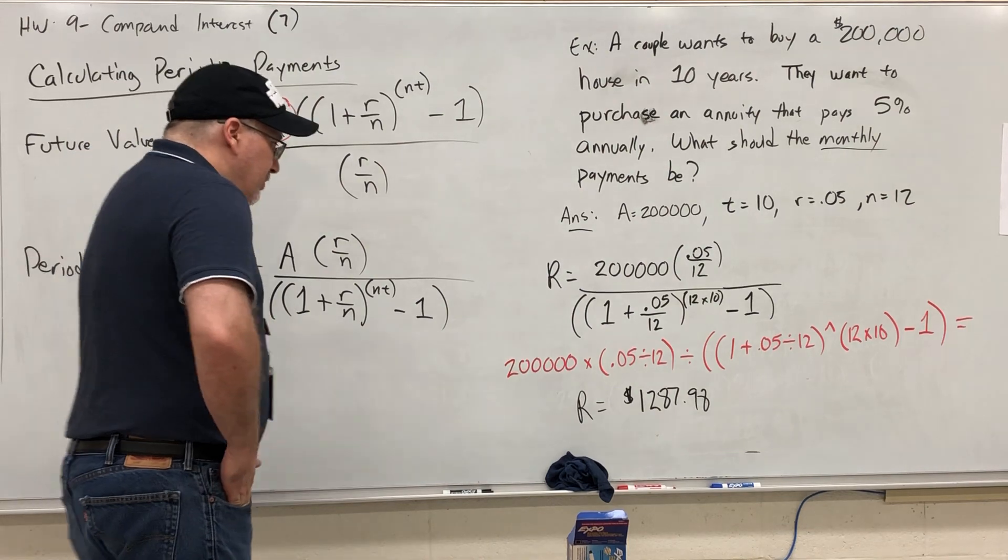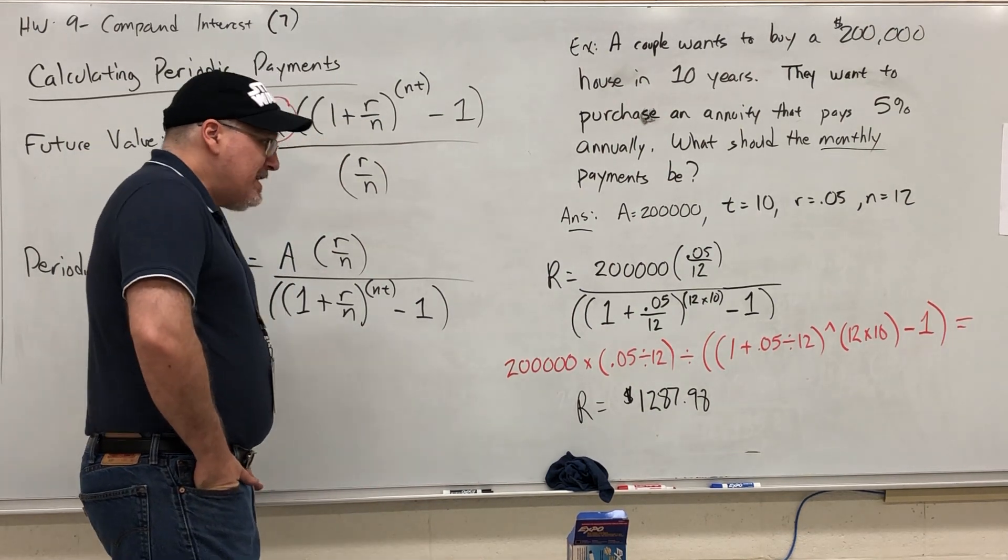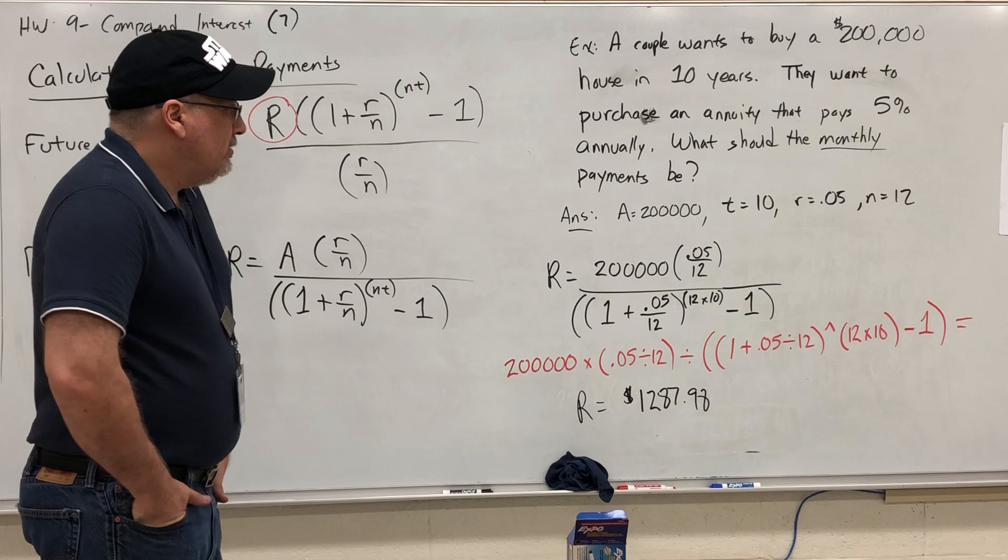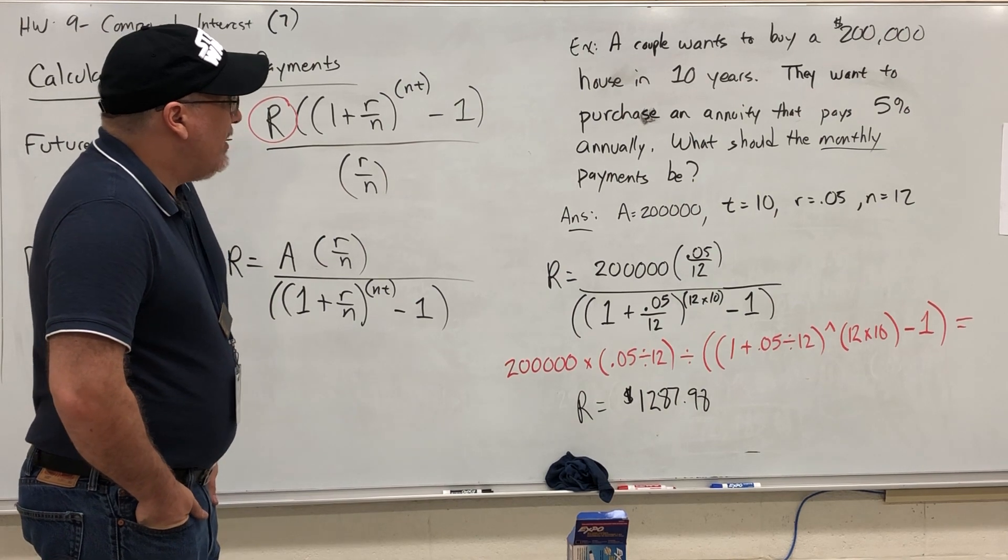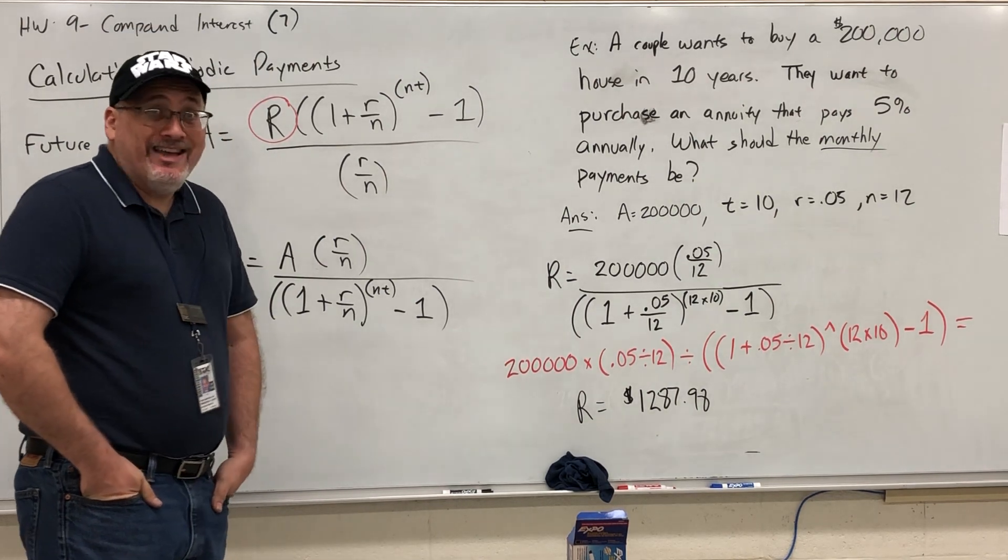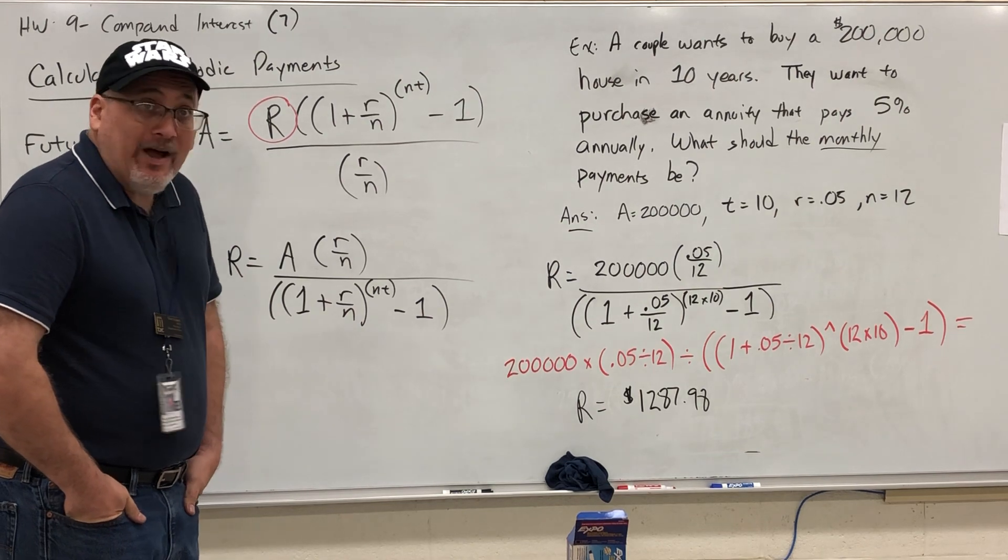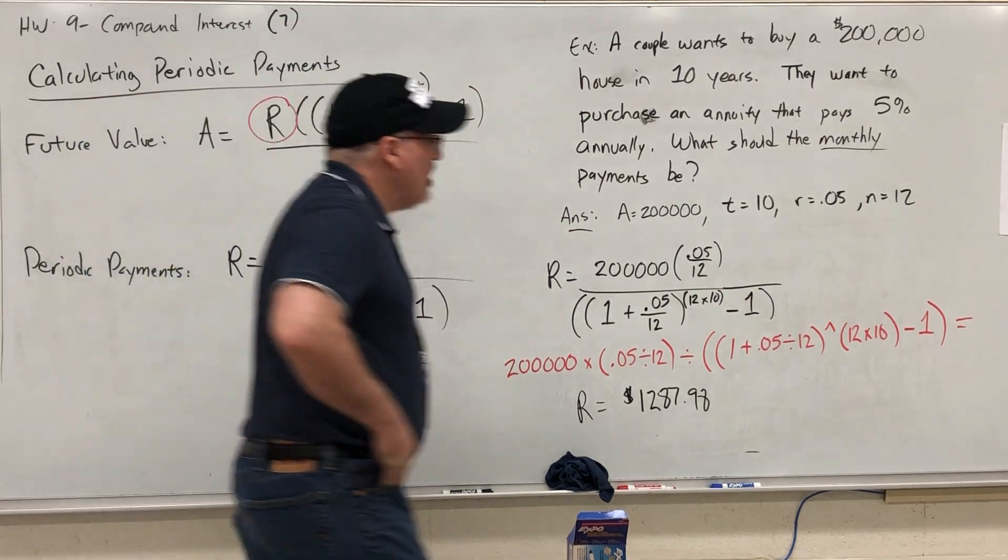Is that a lot of money per month to put aside? Well, if you're going to buy a $200,000 house in 10 years, yes. No, I take that back. No. This is a lot of money.